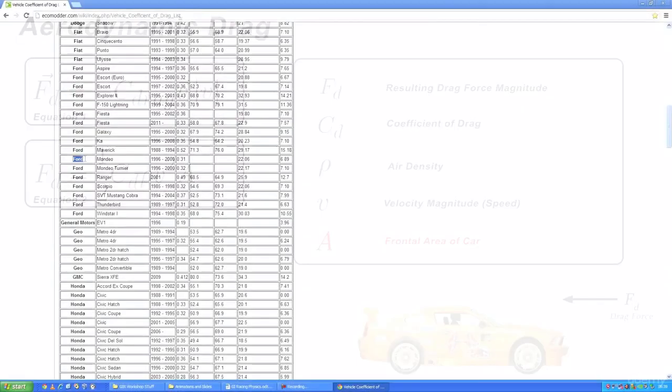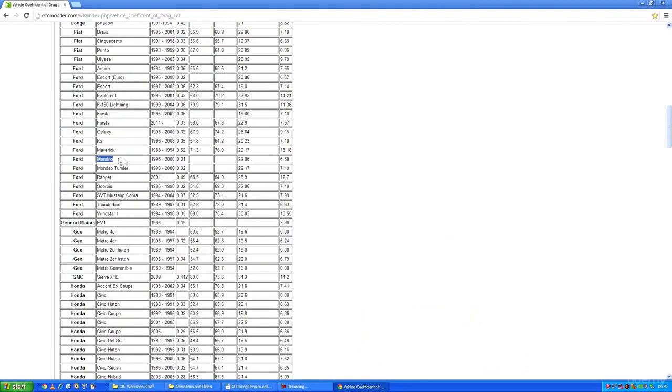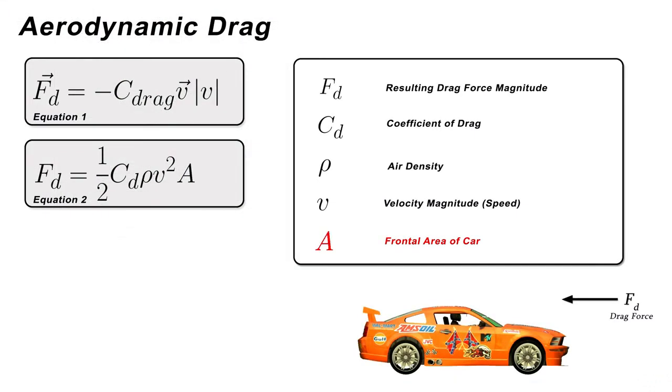For my Ford Mondeo, for example, it states the frontal area as being 22 square feet, or in SI units, 2.0439 meters squared. So while equation 2 might have initially looked a little scary at first glance, all those Greek symbols are just placeholders for real-world values that we can plug in.